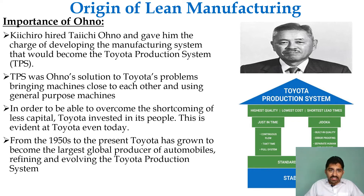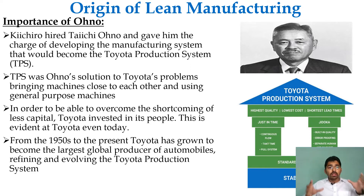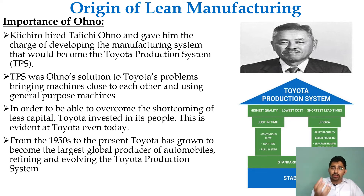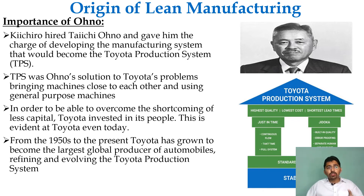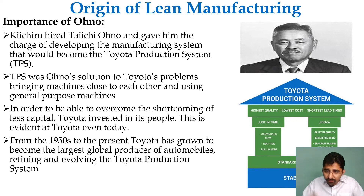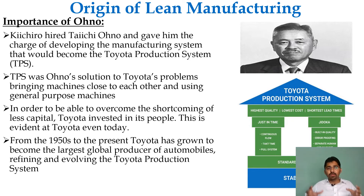The TPS was the solution to Toyota's problems. The first concept was bringing machines close to each other and using general-purpose machines to make effective use of available space and capital. For example, one machine was capable of producing three different types of parts. Thirdly, to overcome the shortcoming of limited capital, Toyota invested heavily in its people. This is evident at Toyota even today — it is not only automation working there, but people driving the automation. From the 1950s to the present, Toyota has grown to become the largest global producer of automobiles.